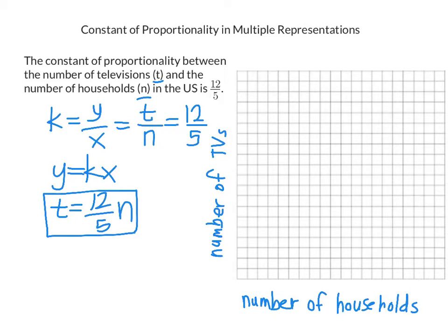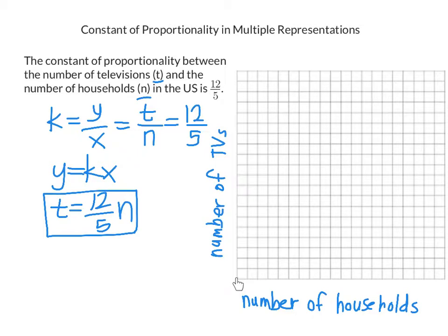Counting by ones, we go right 1, 2, 3, 4, 5 for households, then up 12 for televisions, and plot a point there. Then, with a ruler, line up this point and the origin (0, 0) — because 0 households would have 0 televisions — and draw the line.